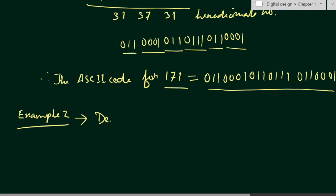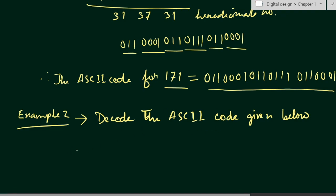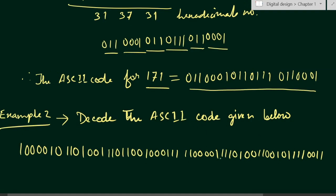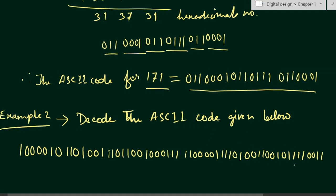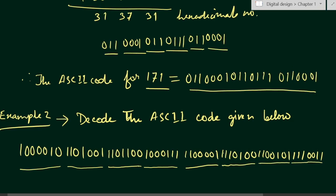Now, decode the ASCII code given below. Suppose we are given an ASCII code and we have to decode it — that means find out the character it represents. We know that in ASCII code we have 7 bits each, so each character is contained in 7 bits. First of all we have to group 7 bits from the right-hand side.